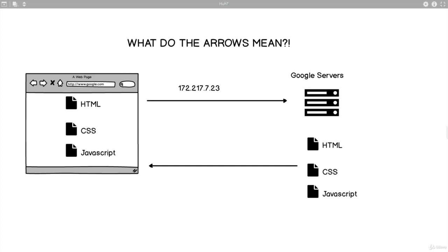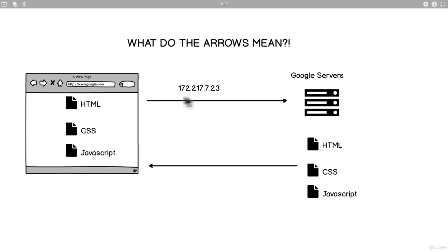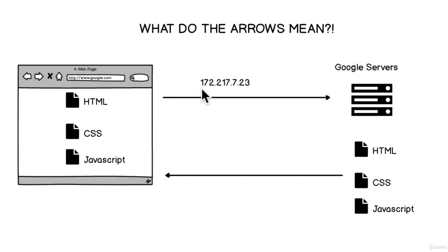We're going to be talking about the internet backbone. We recognize this because I've been talking about it for the last couple of lessons. But some of you may have had a question: what do the arrows mean? I just told you that we send off the IP address to the servers, the server responds with some files, but this is just magic. What do these arrows mean? So we're going to talk about that in this lesson.